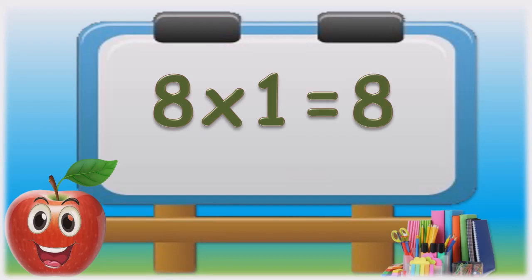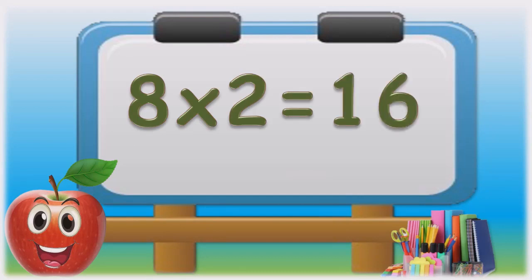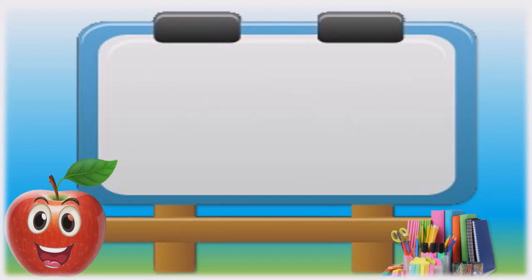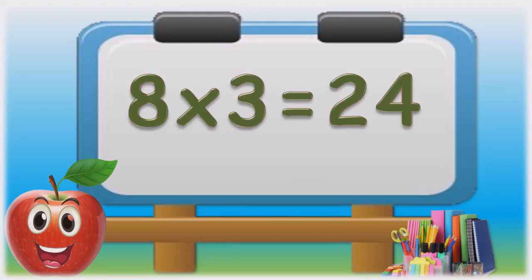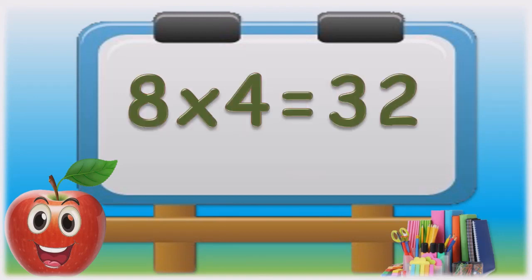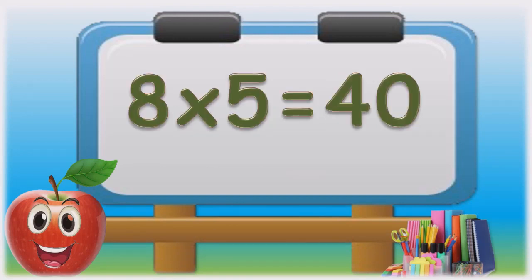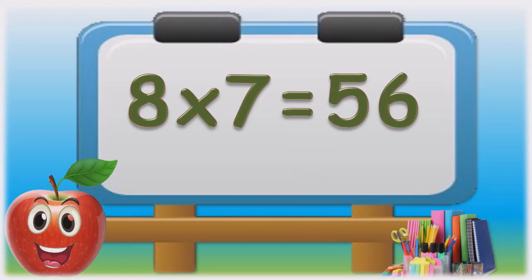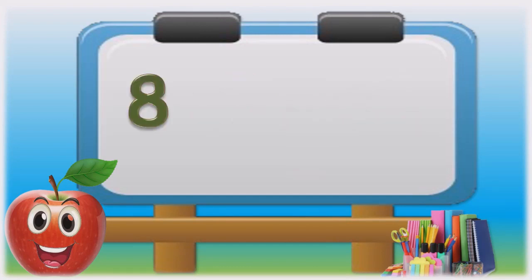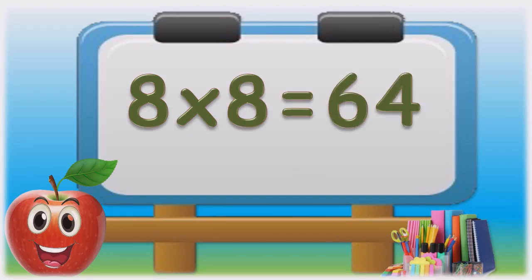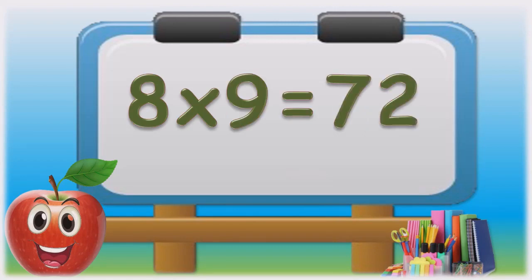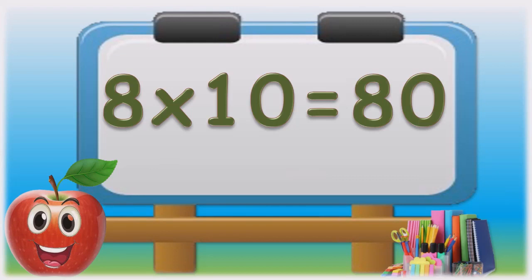Eight ones are eight. Eight twos are sixteen. Eight threes are twenty-four. Eight fours are thirty-two. Eight fives are forty. Eight sixes are forty-eight. Eight sevens are fifty-six. Eight eights are sixty-four. Eight nines are seventy-two. Eight tens are eighty.